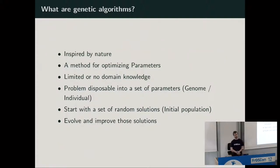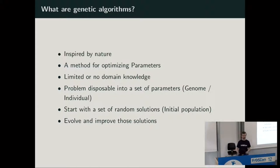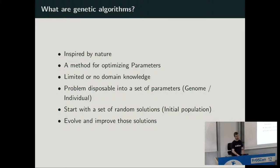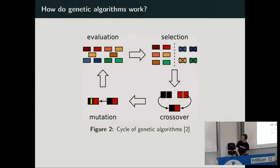The only things we need are for the problem to be testable in a simulation, and for the problem to be decomposable into a set of parameters — called a genome or individual. The algorithm starts by initializing several genomes called a population. Each individual goes into the simulation, and we see how well it completed the track. The algorithm then starts evolving and improving those parameter sets to find the best driver.